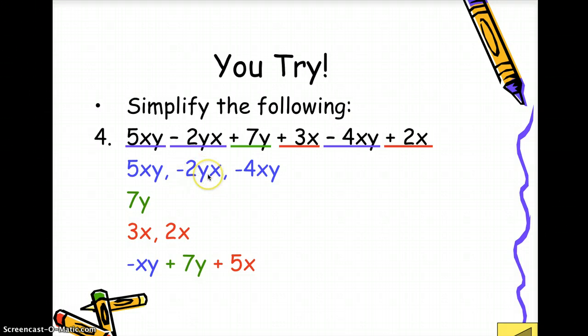Because this is multiplication, then by using the commutative property, which states that when you are multiplying values, the order does not matter because it won't affect the product. So then 5xy plus negative 2xy plus negative 4xy is going to give you negative xy. We just copy 7y. 3x plus 2x is 5x.